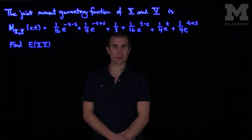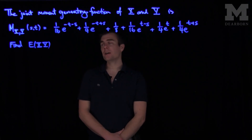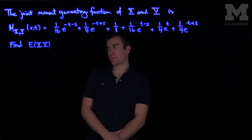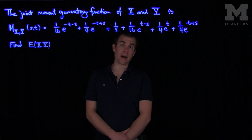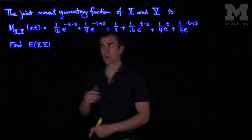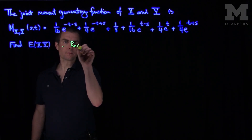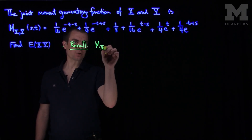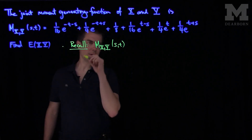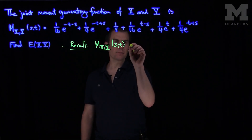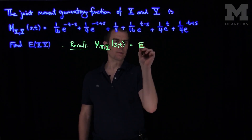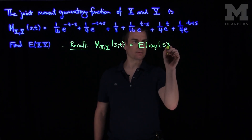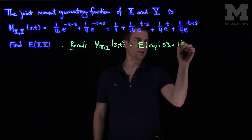Hello students. In this video we'll see the solution to the second problem in the quiz. In this problem we're given the joint moment generating function of x and y by this expression, and we're asked to find the expected value of x times y. We recall that the moment generating function of x and y as a function of s and t is the expected value of the exponential of s times x plus t times y.